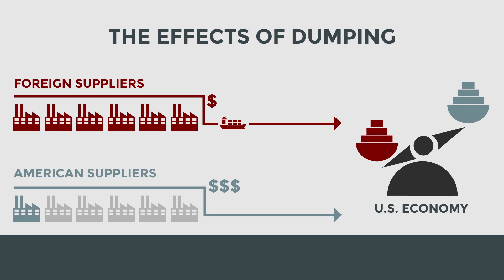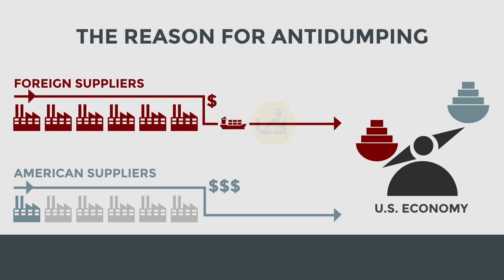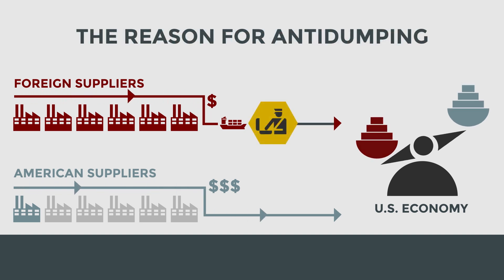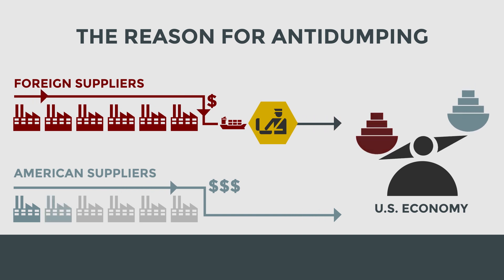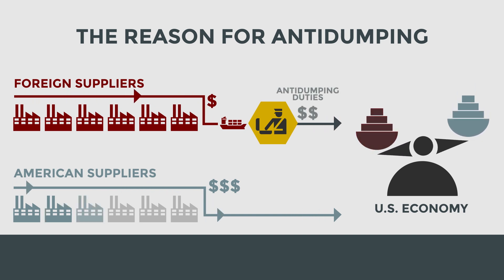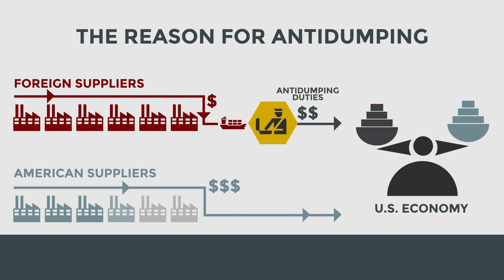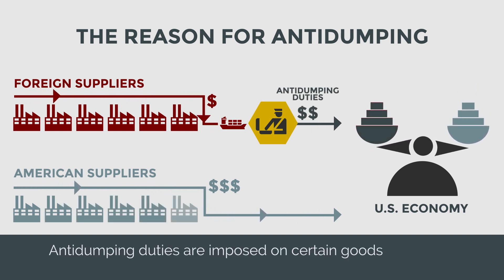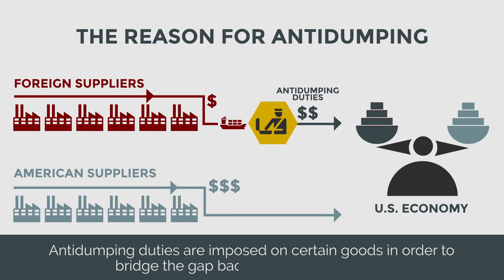In order to prevent dumping from occurring, the U.S. government has established certain preventative measures known as anti-dumping. Anti-dumping duties are imposed on certain goods in order to bridge the gap back to fair market value.